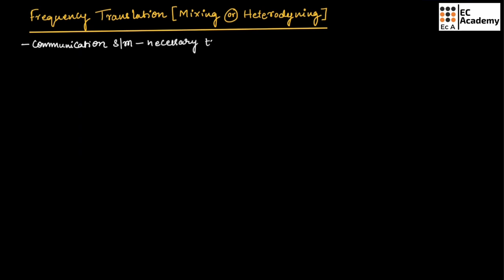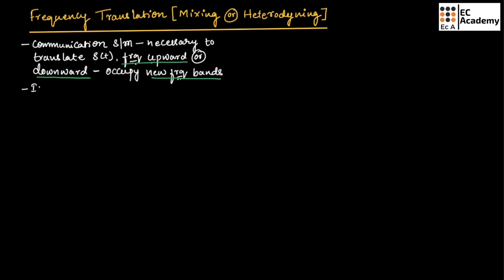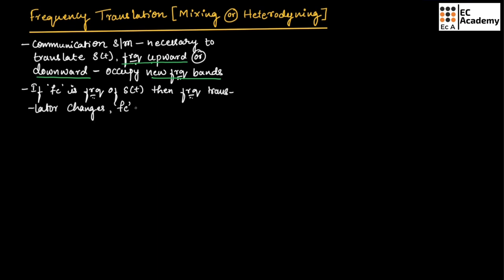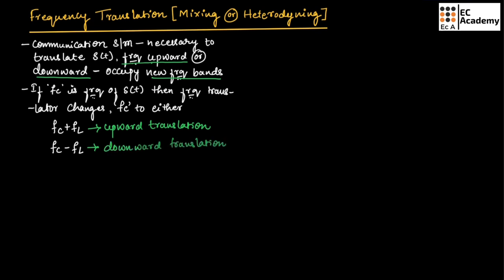it is necessary to translate the modulated wave S(T) frequency upward or downward so that it can occupy new frequency bands. If Fc is the frequency of modulated wave S(T), then a frequency translator changes the modulated wave frequency Fc to either Fc plus Fl or Fc minus Fl. If the frequency is changed to Fc plus Fl, it is known as upward translation. And if frequency changes to Fc minus Fl, it is known as downward translation.